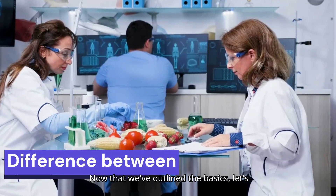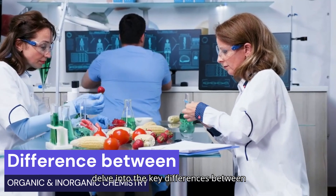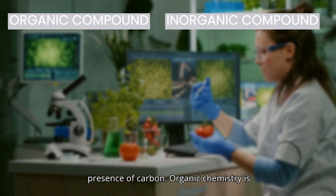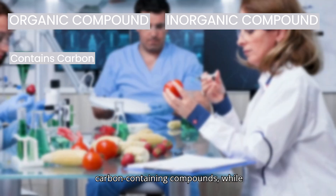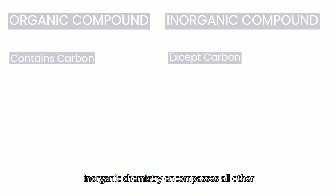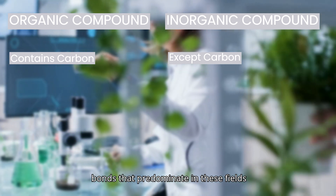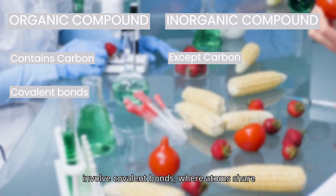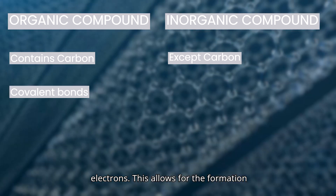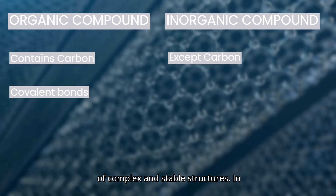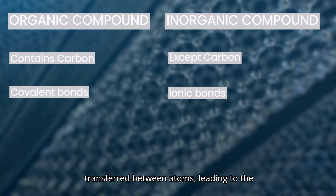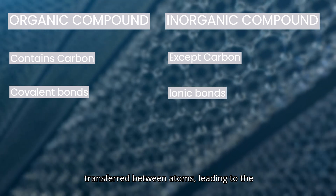Now that we've outlined the basics, let's delve into the key differences between organic and inorganic chemistry. The first and most obvious difference is the presence of carbon. Organic chemistry is primarily concerned with carbon-containing compounds, while inorganic chemistry encompasses all other elements. Secondly, the types of bonds that predominate in these fields differ. Organic compounds typically involve covalent bonds, where atoms share electrons, allowing for the formation of complex and stable structures. In contrast, inorganic compounds often feature ionic bonds, where electrons are transferred between atoms, leading to the formation of charged ions.